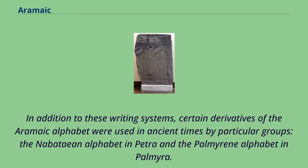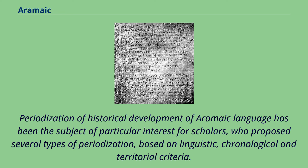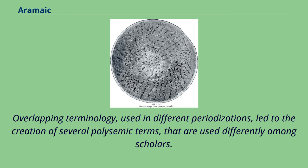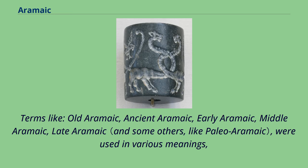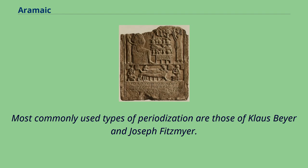Periodization of the historical development of the Aramaic language has been the subject of particular interest for scholars, who proposed several types of periodization based on linguistic, chronological, and territorial criteria. Overlapping terminology used in different periodizations led to the creation of several polysemic terms used differently among scholars — terms like Old Aramaic, Ancient Aramaic, Early Aramaic, Middle Aramaic, and Late Aramaic were used in various meanings. Most commonly used types of periodization are those of Klaus Bayer and Joseph Fitzmayer, alongside the more recent periodization of Aaron Butz.